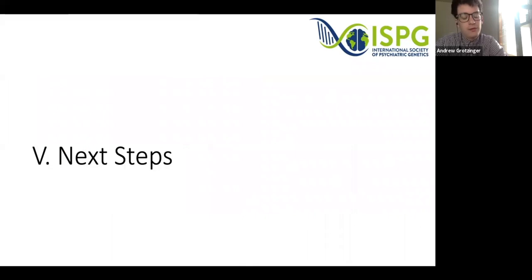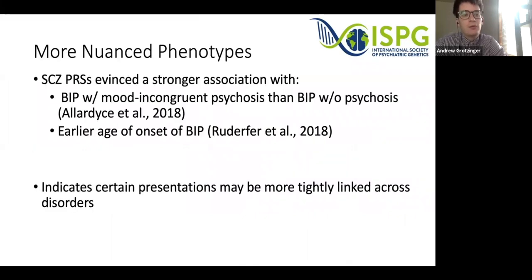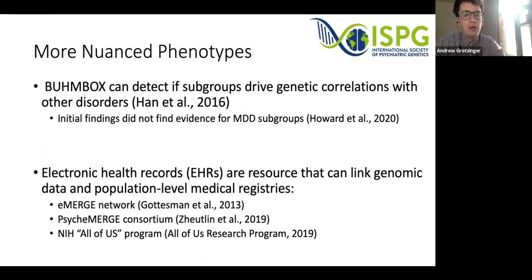I'm going to end by talking about major next steps for cross-disorder efforts. One is consideration of more nuanced phenotypes, which can help classify mixed presentations like those in bipolar disorder and schizophrenia. Polygenic risk score analyses point to why this matters: schizophrenia PRS show a stronger association with bipolar disorder characterized by mood-incongruent psychosis compared to bipolar without psychosis, and with earlier age of onset. Methods like BOOMBOX can detect subgroups within a disorder driving genetic correlations, though initial findings did not find such subgroups for major depressive disorder, and this largely remains to be tested for other disorders.